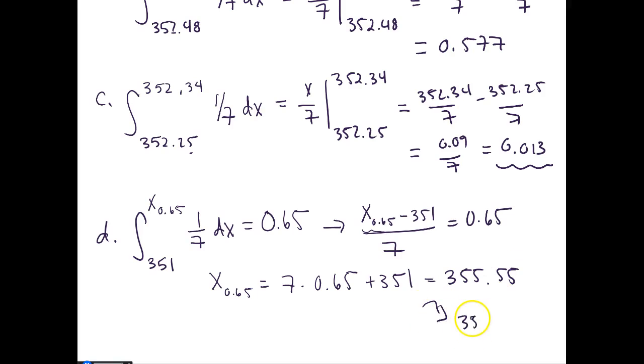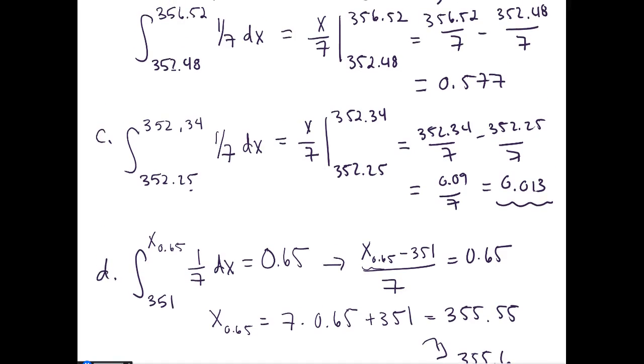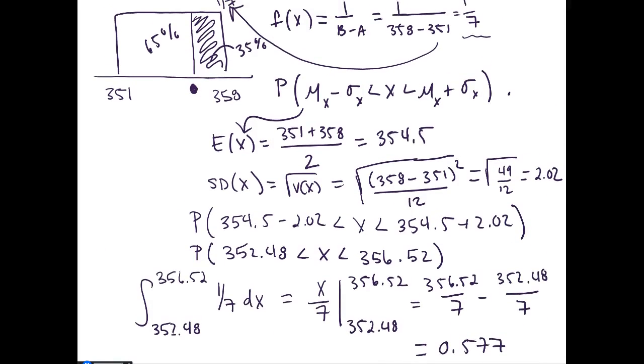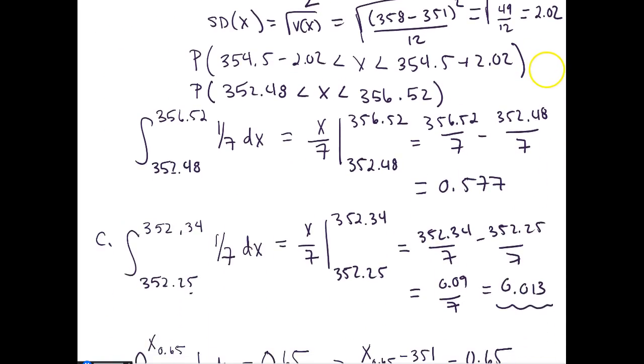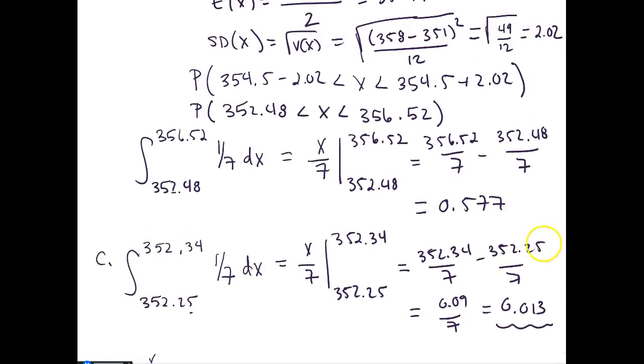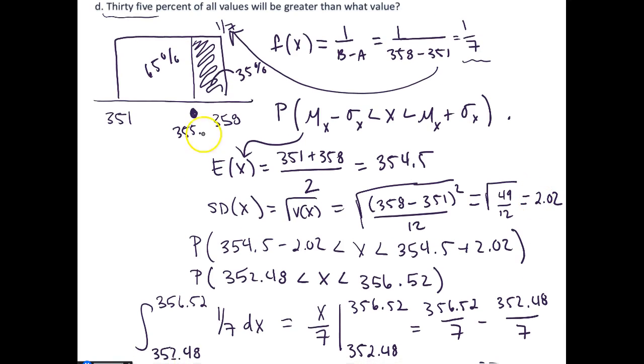Or in other words, 355.6, because all values are rounded to the tenths place. If we look back up here, does that value make sense? It would be right about here, 355.6. Just based on the eyeball approximation, that seems to make sense.